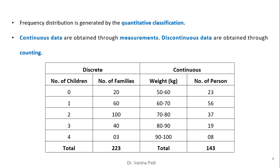Frequency distribution is generated by quantitative classification. Continuous data are obtained through measurements, while discontinuous data are obtained through counting. See the example of discrete and continuous variables: the number of children is discrete — showing how many families have a given number of children — which is a frequency distribution for discrete data. The second example uses weight, where a range is given, making it continuous. For continuous data we take measurements; for discrete data we do counting.